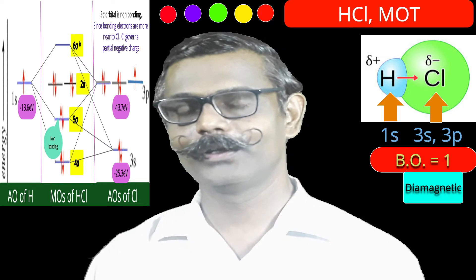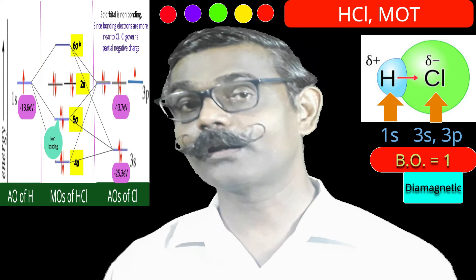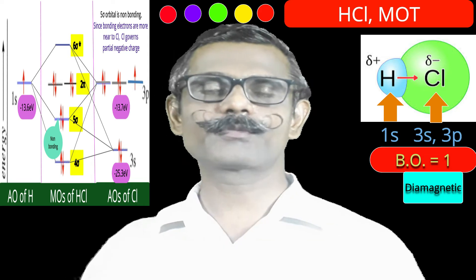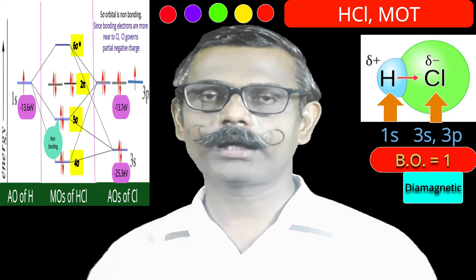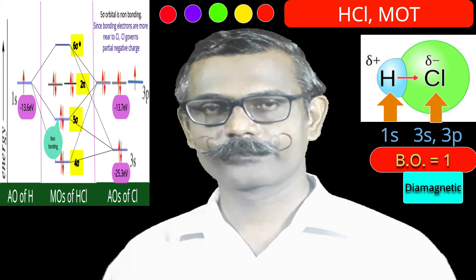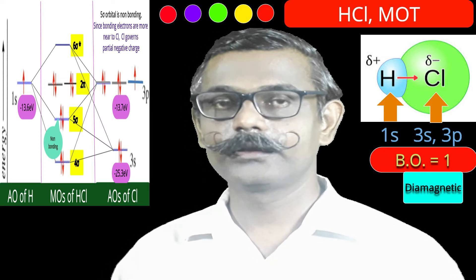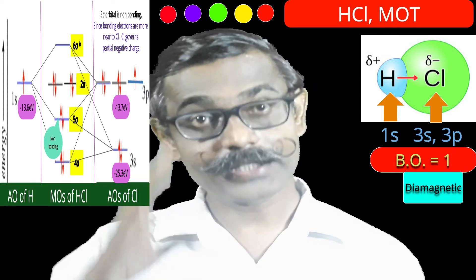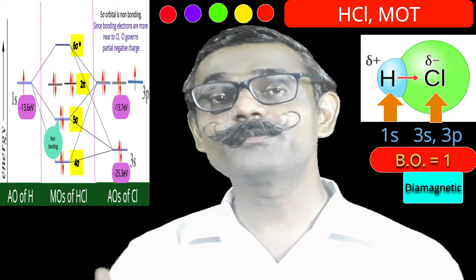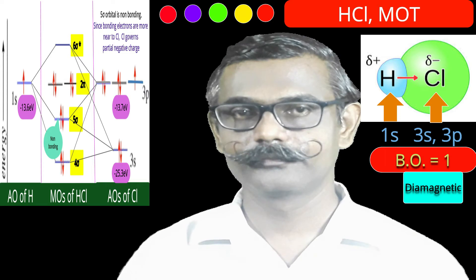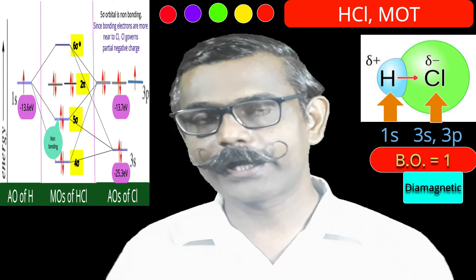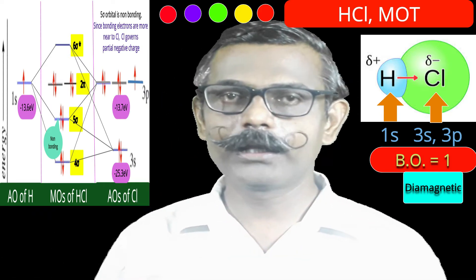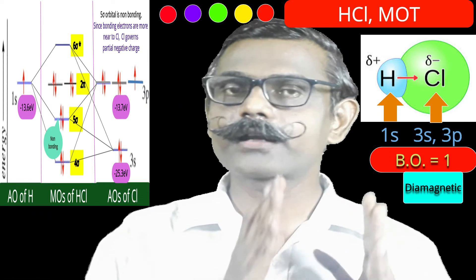Let us discuss the HCl molecule — a linear heteronuclear diatomic molecule. In HCl, two different atoms are present: one hydrogen and one chlorine. For the MO diagram, the left compartment contains atomic orbitals of hydrogen, the middle compartment contains molecular orbitals of HCl, and the right compartment contains atomic orbitals of chlorine.